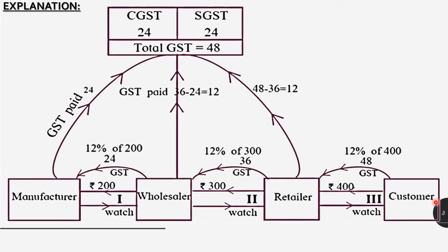Looking at the flowchart: from the manufacturer, the watch goes to the wholesaler, and the wholesaler is paying rupees 200 to the manufacturer. At this stage we apply 12% of 200 as GST, which gives rupees 24. So GST at this stage is rupees 24. The wholesaler pays 200 plus 24 rupees GST to the manufacturer, and the manufacturer pays that rupees 24 to the government.